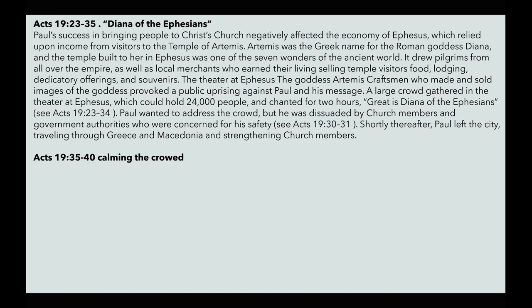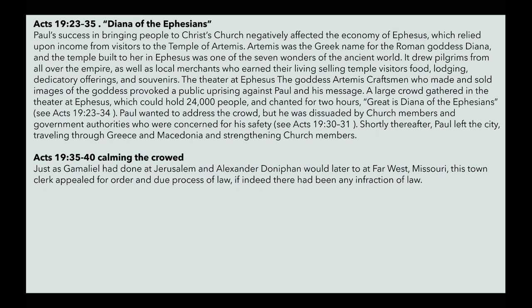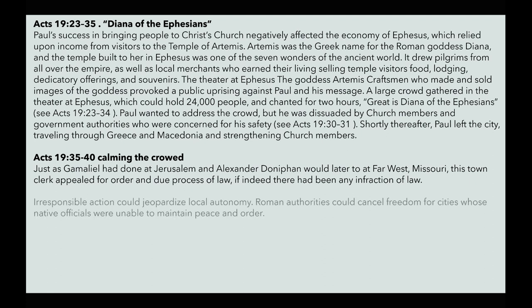Acts 19:35–40: calming the crowd. Just as Gamaliel had done at Jerusalem and Alexander Doniphan would later do at Far West, Missouri, this town's clerk appealed for order and due process of law, if indeed there had been any infraction. Irresponsible action could jeopardize local autonomy—Roman authorities could cancel freedom for cities whose native officials were unable to maintain peace and order. They didn't want Roman soldiers cracking down on them, and that's why the clerk was appealing for order against Paul.